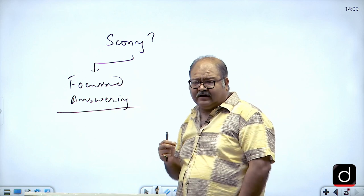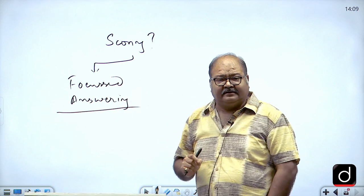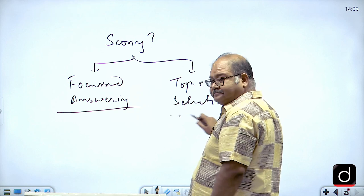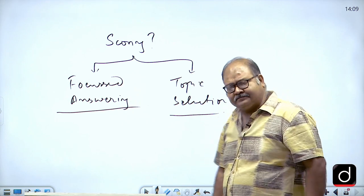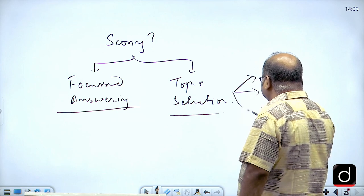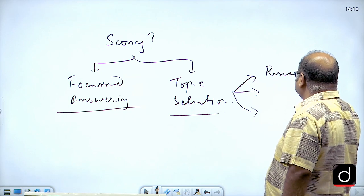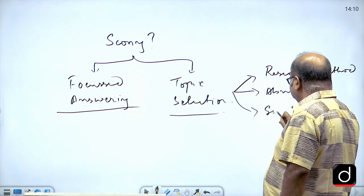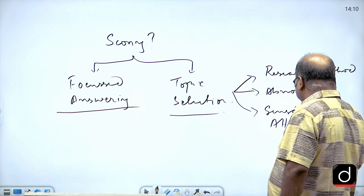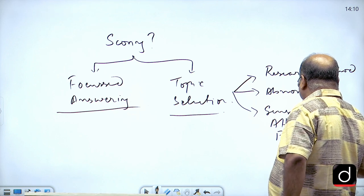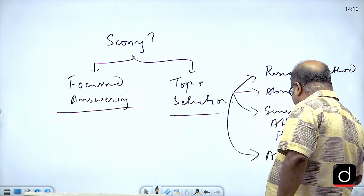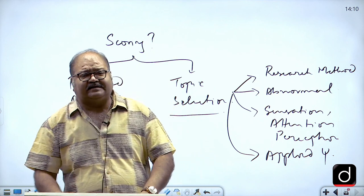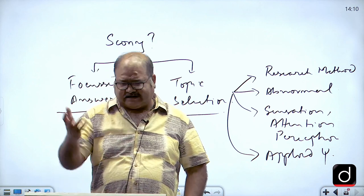First is focused answering — the answers will not allow you to write more than 200 words, and 200 means 200. Second is topic selection — which topics are you choosing to answer. If you want to score good marks in psychology, the indispensable topics are research method, abnormal psychology, sensation, attention, perception, and any topic from the domain of applied psychology. If you have attempted questions from these areas, I have no doubt you will score higher than 60 percent — which is the objective to become an IAS officer.